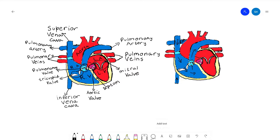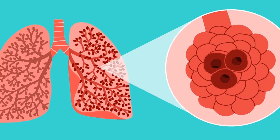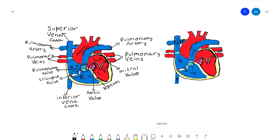In the lungs, there are air sacs or small organs called the alveolus. The alveolus takes in the carbon dioxide from the deoxygenated blood and gives the blood oxygen. The alveolus gets its oxygen from what you breathe in. When you breathe in oxygen, it goes to both lungs and finally ends up in the alveolus where it gets exchanged for CO2. That is why you breathe out CO2 and not oxygen.